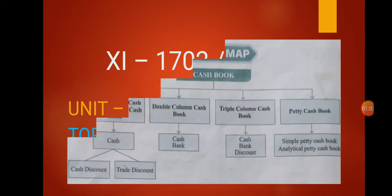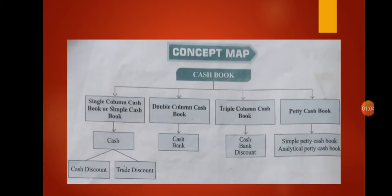First, let us see the concept map. Cash book can be divided into 4 types. First, single column cash book, otherwise known as simple cash book. Second, double column cash book. Third, triple column cash book. And finally, petty cash book.